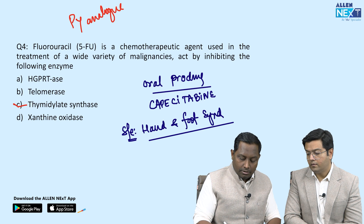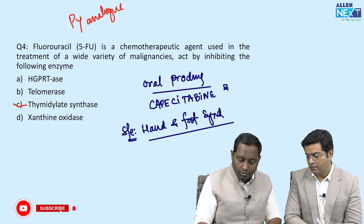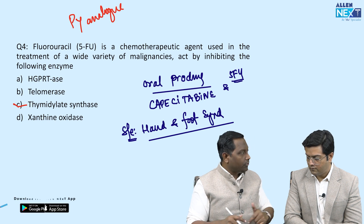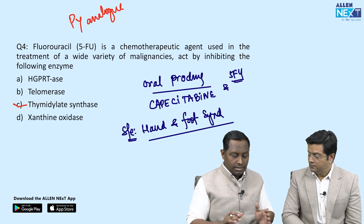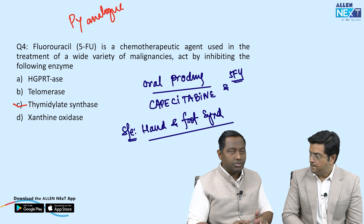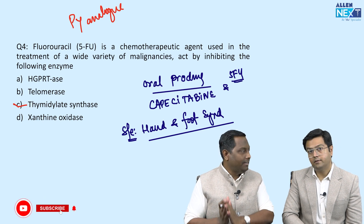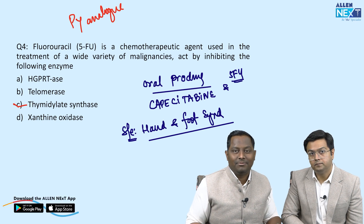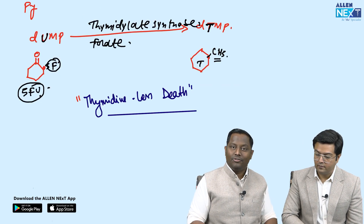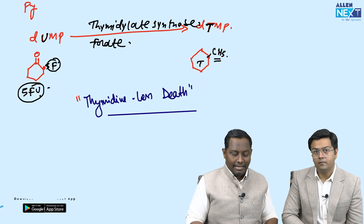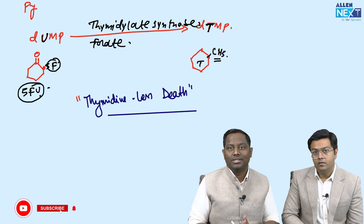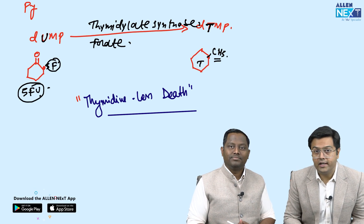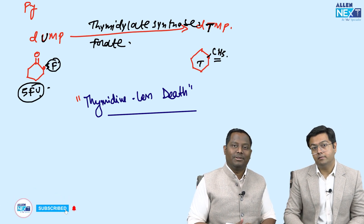Both capecitabine and 5-fluorouracil cause hand-foot syndrome in addition to other side effects like bone marrow suppression, alopecia, nausea, and vomiting. Capecitabine is the oral prodrug of 5-fluorouracil. So to summarize: thymidylate synthase inhibitor — 5-fluorouracil — causing thymidine-less cell death. We hope you enjoyed these integrated questions. Let us know in the comments if you want more sessions like this. Thank you!